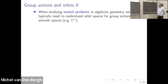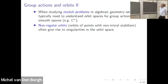In algebraic geometry, we study moduli problems, which are about classifying things like vector bundles on curves, or maybe the curves themselves. The traditional approach to moduli problems is to translate them into understanding the orbits of the action of a group on a certain space. A serious problem one encounters is that even if we look at orbits on a smooth space, the orbits of points which have a non-trivial stabilizer will usually give rise to singularities in the orbit space.